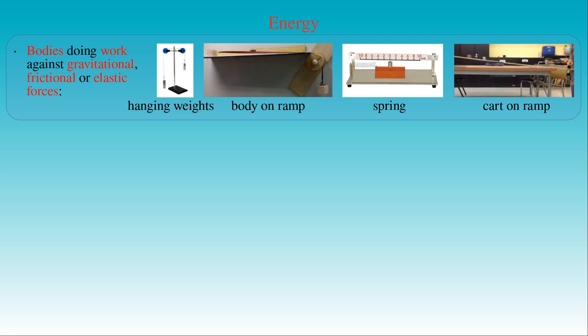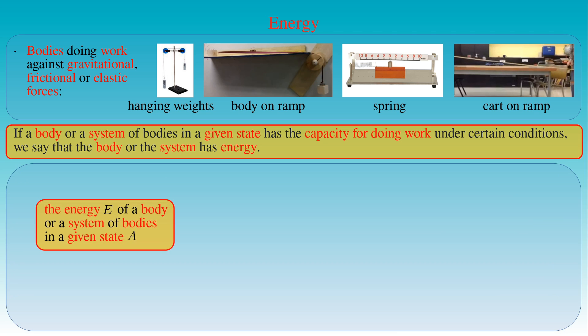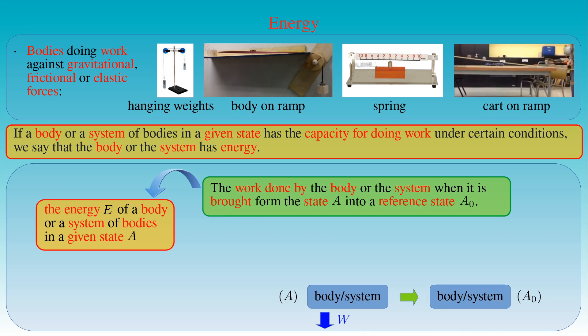Then we have the following general statement: if a body or a system of bodies in a given state has the capacity for doing work under certain conditions, we say that the body or the system has energy. The energy E of a given body or system is measured by the work done by the body or the system when it is brought from the state A into another reference state A0. We can choose an arbitrary state as the reference state A0 so that all possible states of the body or the system could be compared with it.